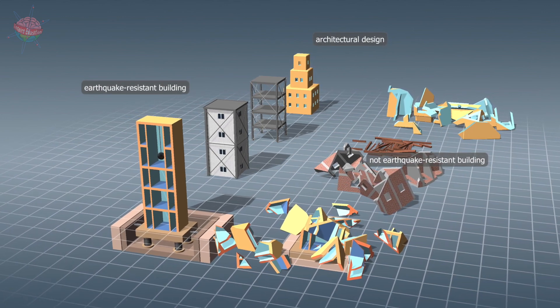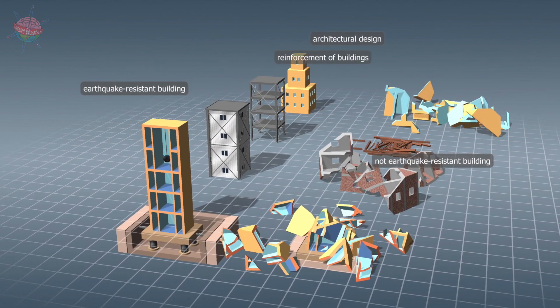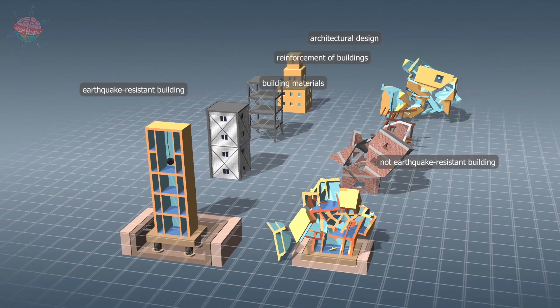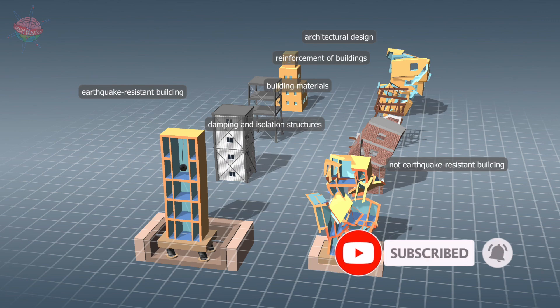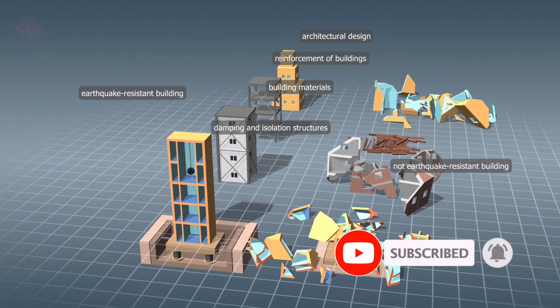The architectural design of buildings, their reinforcement, the building materials used, and seismic isolation and damping structures are all important in terms of seismic resistance.